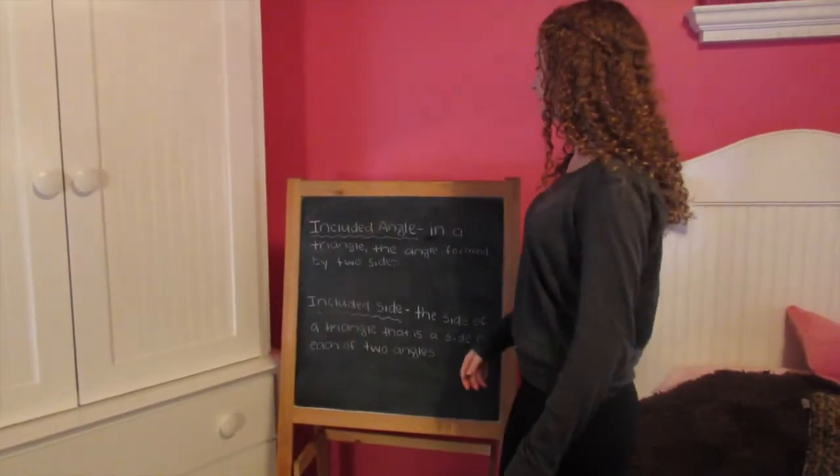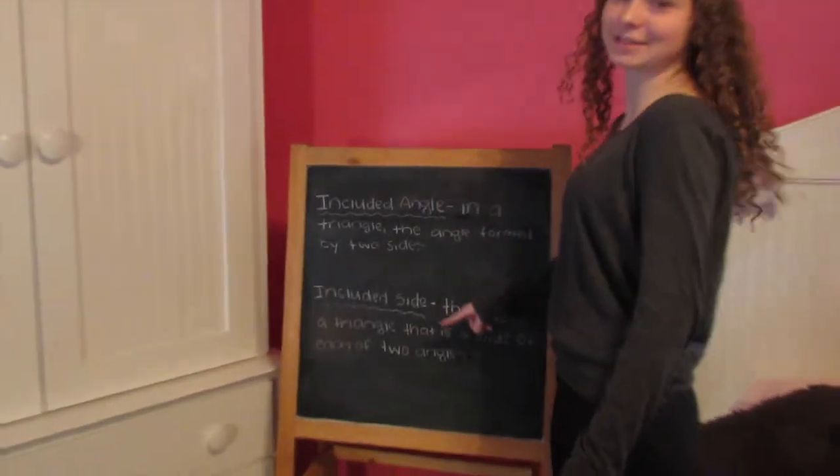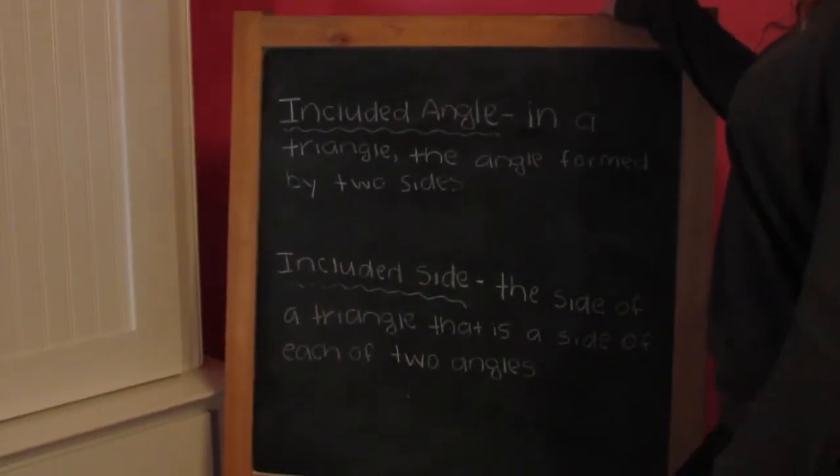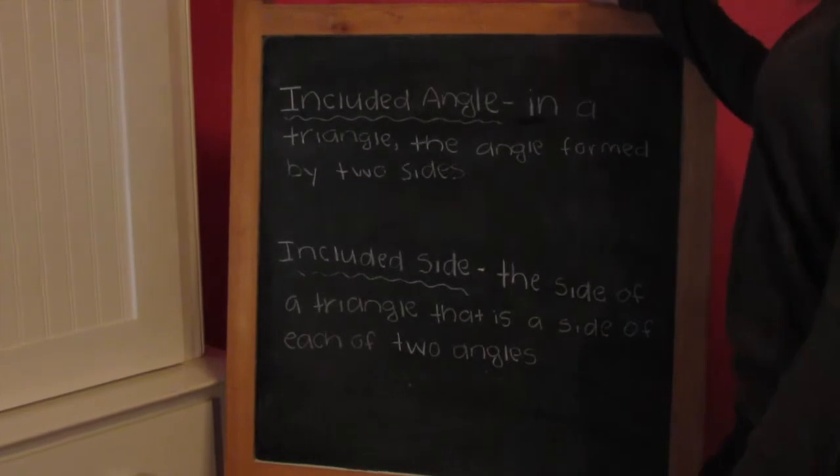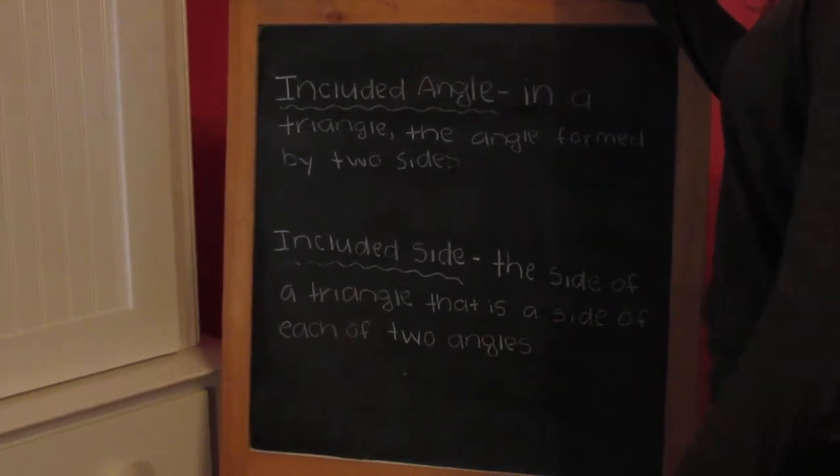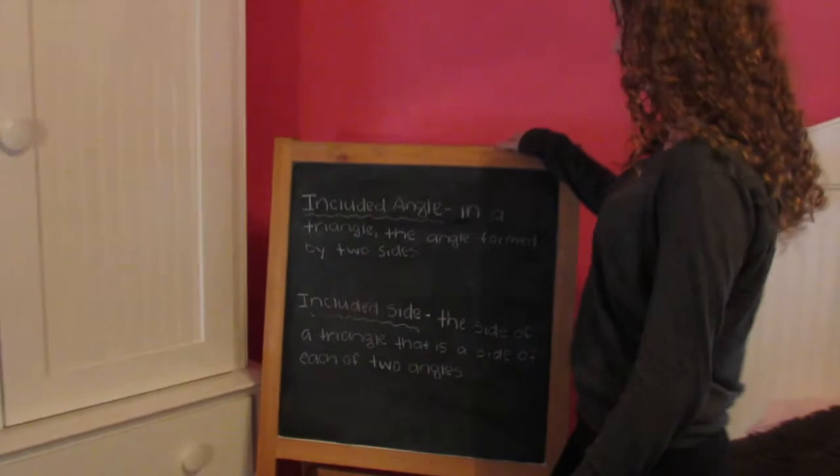And now the final two definitions, which are included angle and included side. Included angle is, in a triangle, the angle formed by two sides. Included side is the side of a triangle that is a side of each of two angles.